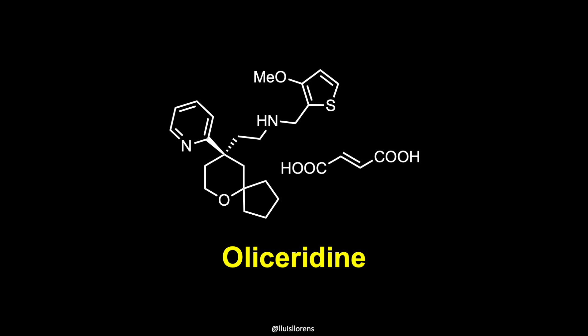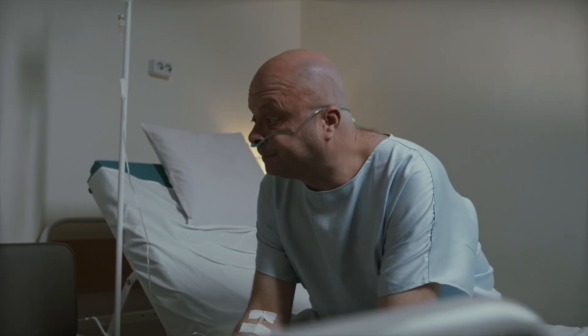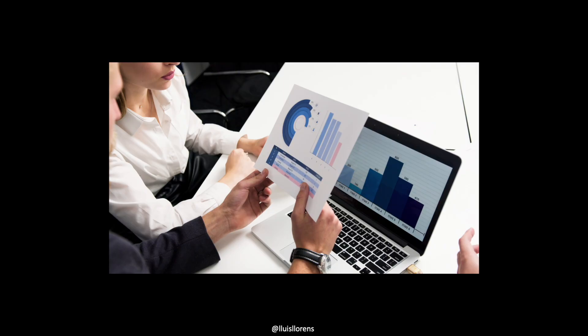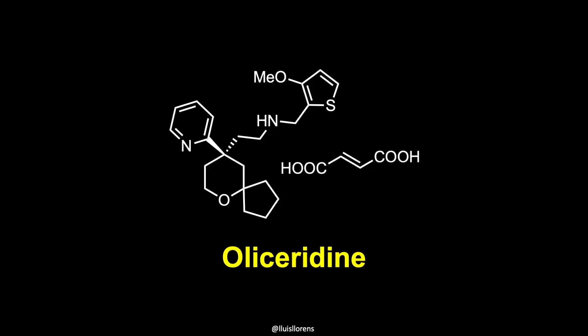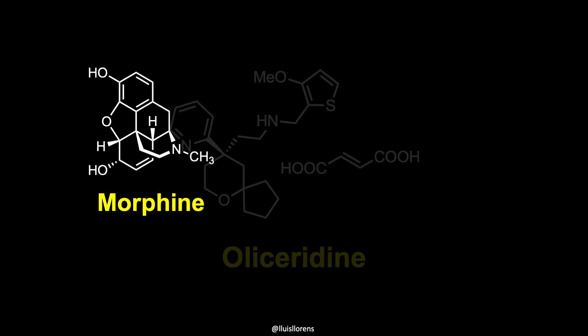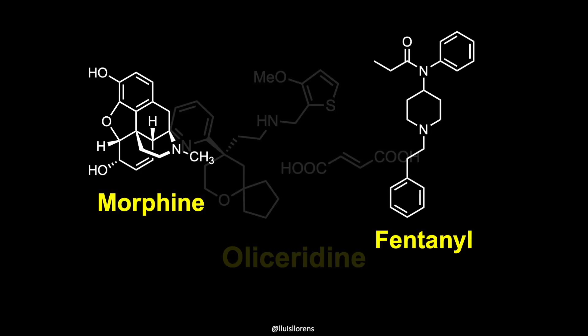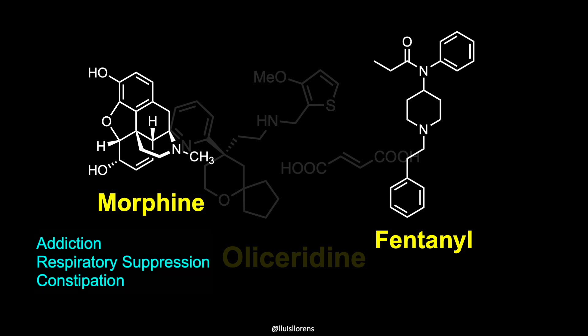Opioids are the most effective drugs for the treatment of acute and chronic pain, and they occupy the largest market share of analgesic medications. Medical uses of opioids for pain relief include opioid alkaloids such as morphine and synthetic opioids like fentanyl. Although opioids are potent painkillers, they also result in severe adverse effects such as addiction, respiratory suppression, and constipation, thus limiting their clinical use.